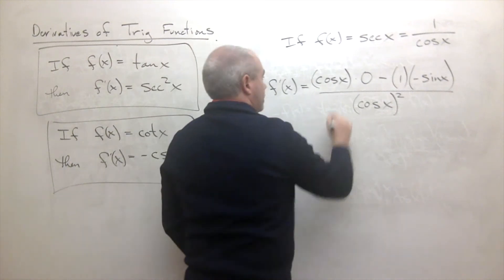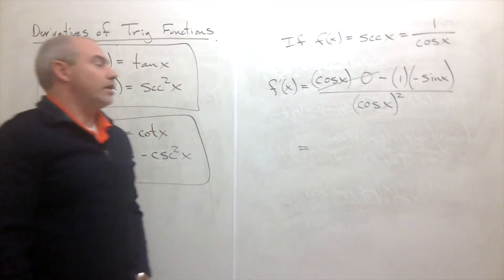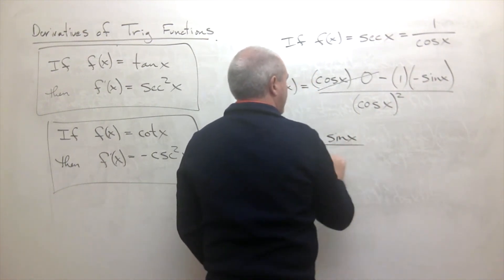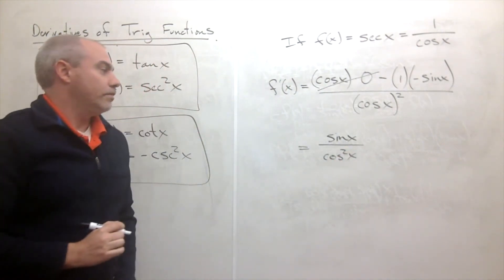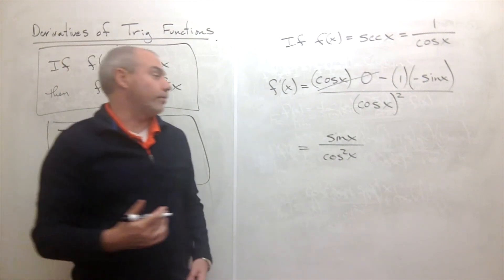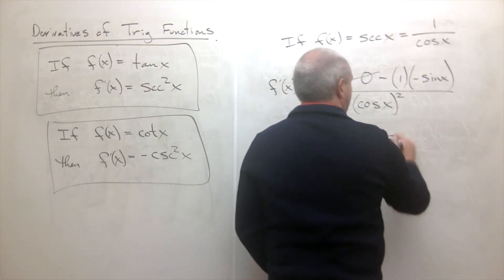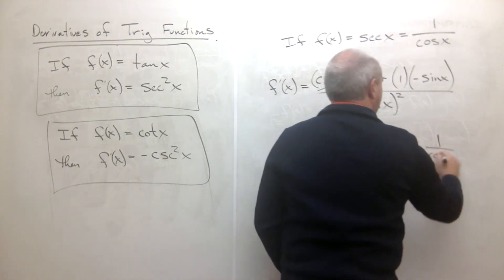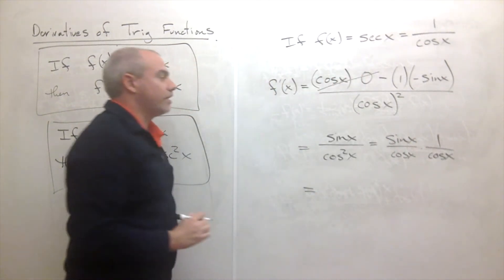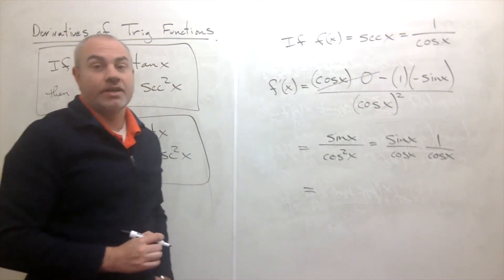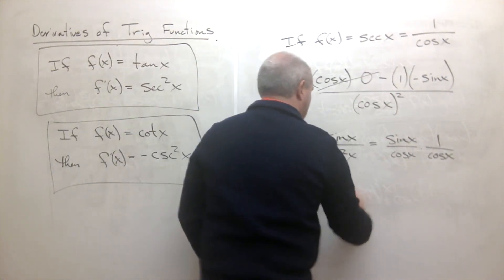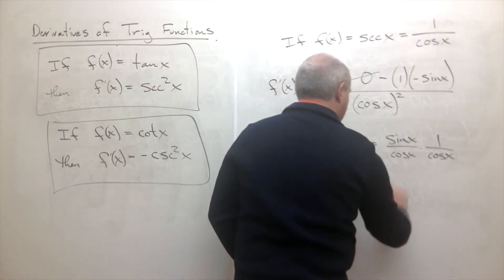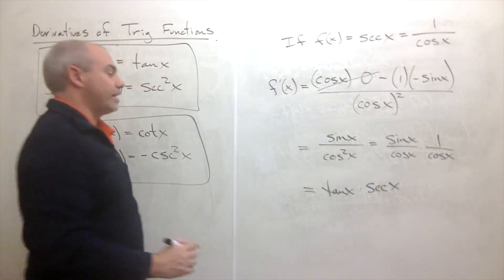The first term cancels because of the zero, leaving minus one times minus sine of x, giving us sine of x divided by cosine squared of x. We can rewrite this as sine x over cosine x times one over cosine of x, and sine over cosine is tangent of x, so the answer is tangent x times secant x.